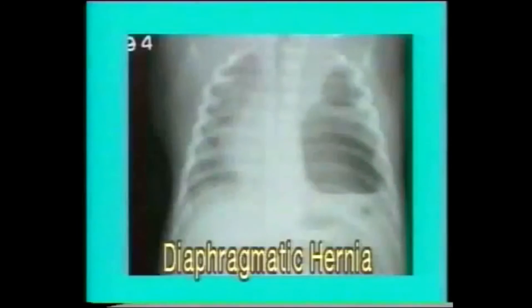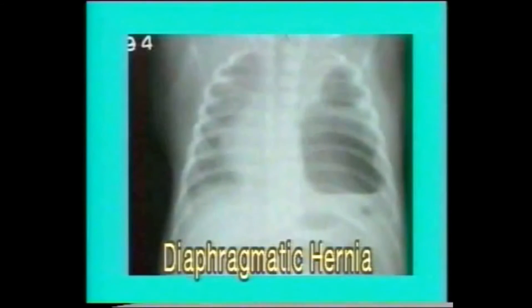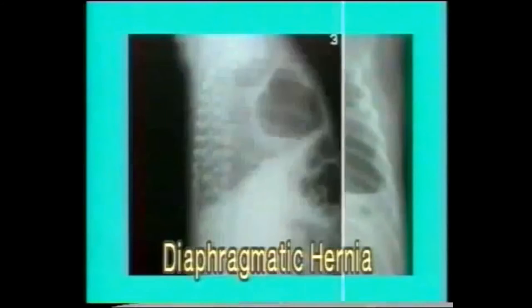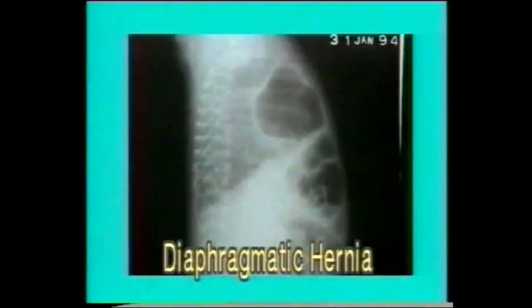This X-ray shows large gas shadows in the left hemithorax, pushing the heart to the opposite side and compressing the right lung. This is a large diaphragmatic hernia. Note the lateral view showing the colon rising into the chest.